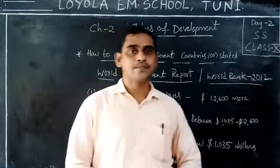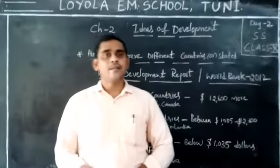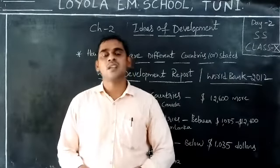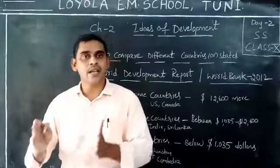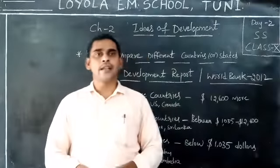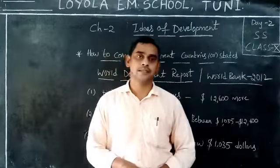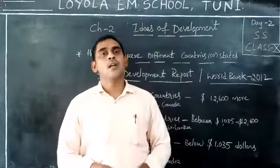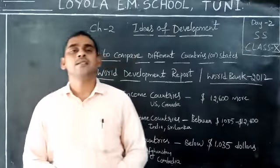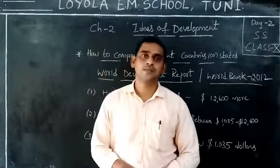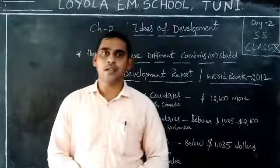What are developed countries? Some West Asian countries and some small countries are mentioned separately. Except for those, the remaining high-income countries are called developed countries. Examples include America, Russia, Japan, Germany, Singapore, and Britain. These are some examples of developed countries.